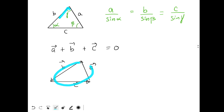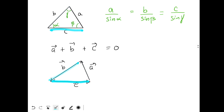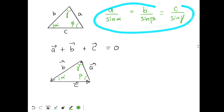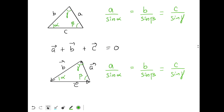This triangle is similar to the triangle case. Side a corresponds to vector a, side b to vector b, and side c to vector c. Drawing the same angles alpha, beta, and gamma, I can write the same equation for this vector triangle as well. This is Method 1 for the triangle and Method 2 for vectors.